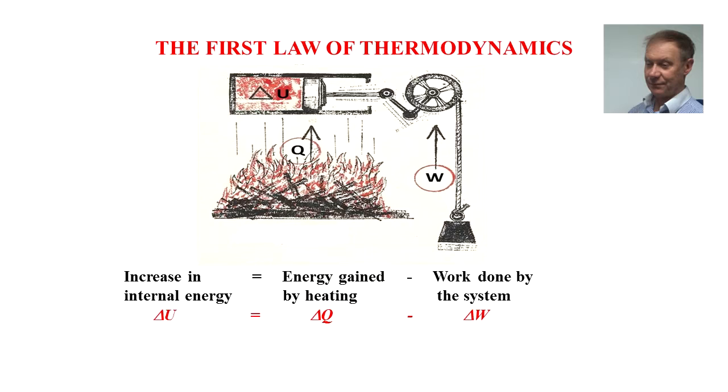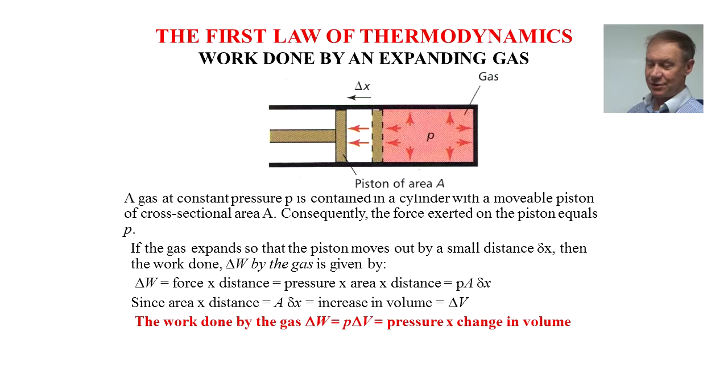Very important in all these heat engines and pumps is work done by expanding gas. In the diagram shown, a piston of area A moves a distance delta X to either compress or expand a gas. In this case it's gas expansion, so the gas is doing work. A gas at constant pressure P is contained in a cylinder with a movable piston of cross-section area A. The force on the piston equals PA.